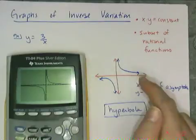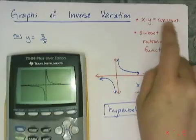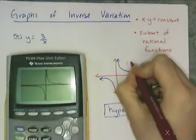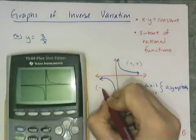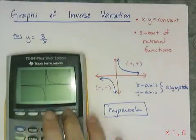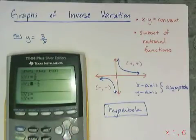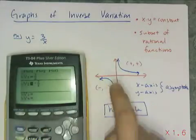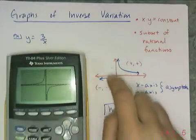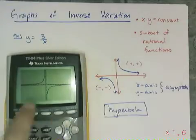The graph appears in the first and third quadrants because the constant is positive 3. The only way to get a positive product from multiplication is a positive x and positive y, or a negative x and negative y. If the constant were negative 3, the graph would appear in the second and fourth quadrants. So all inverse variations will either look like one or the other, depending on the sign of the constant.